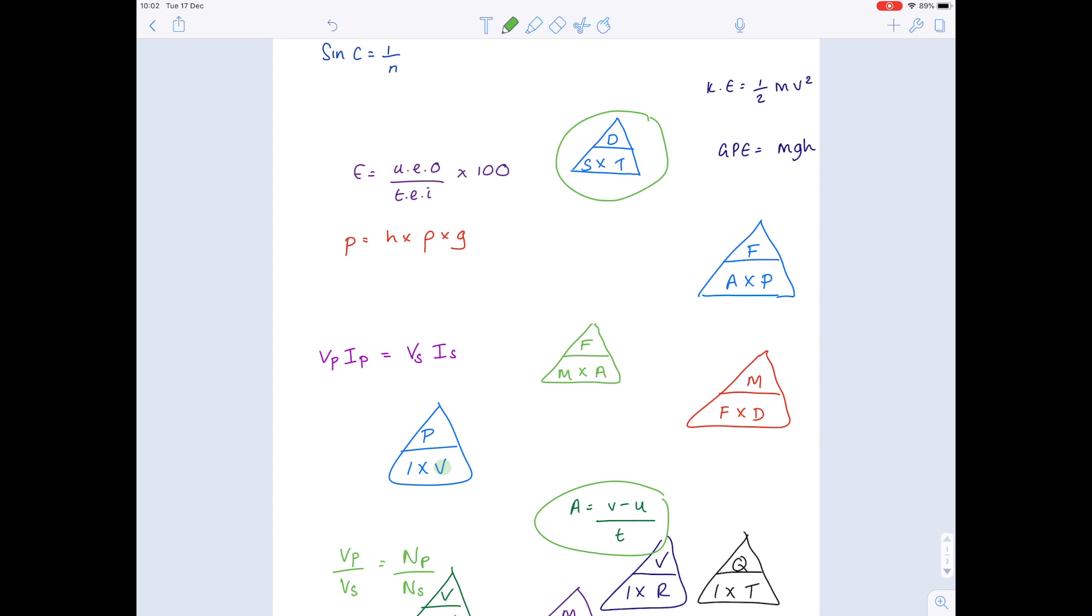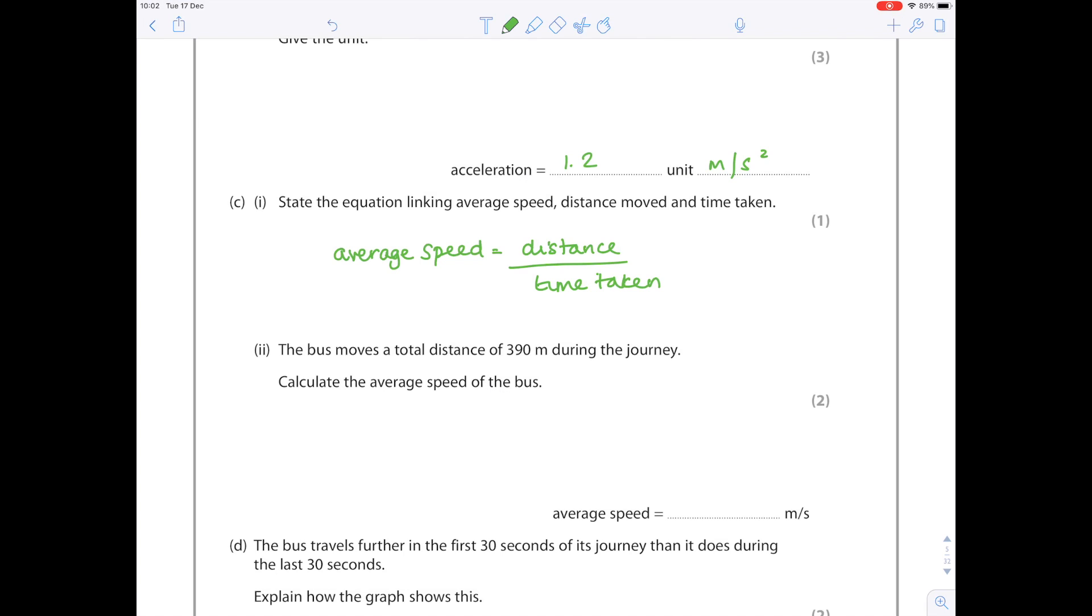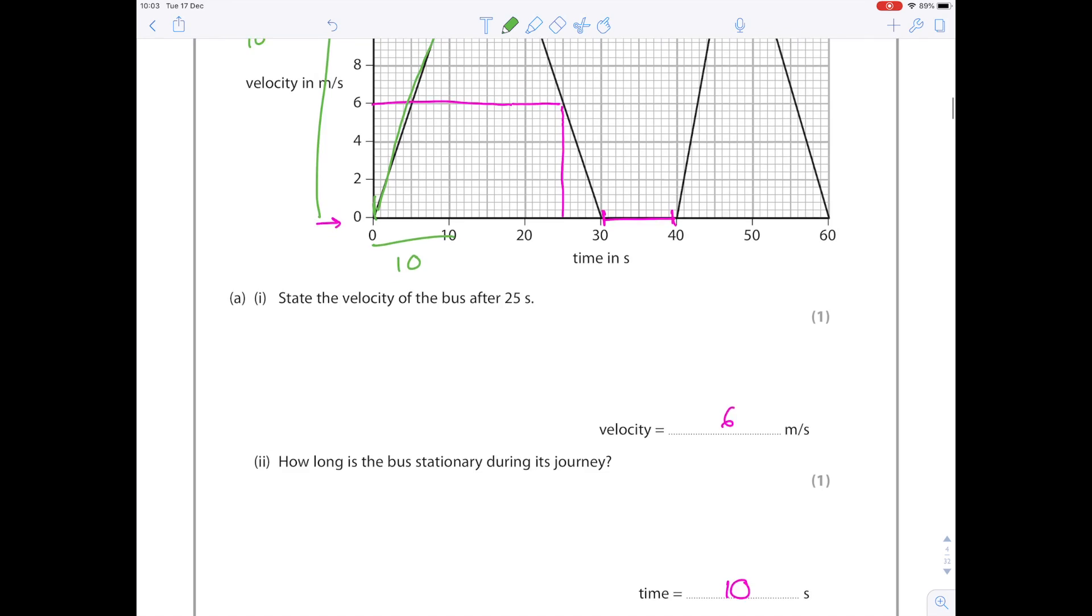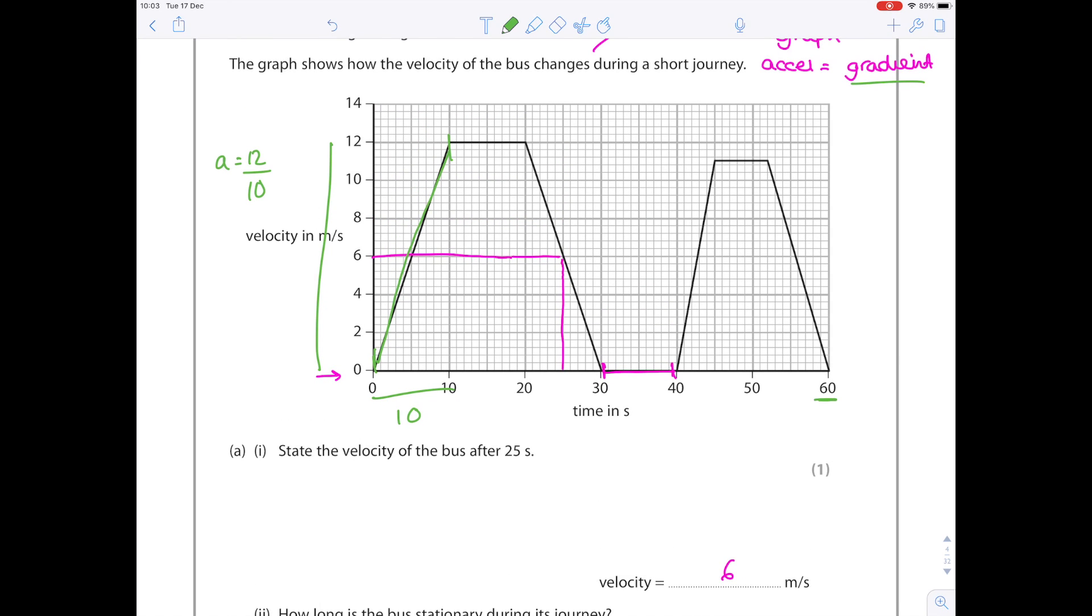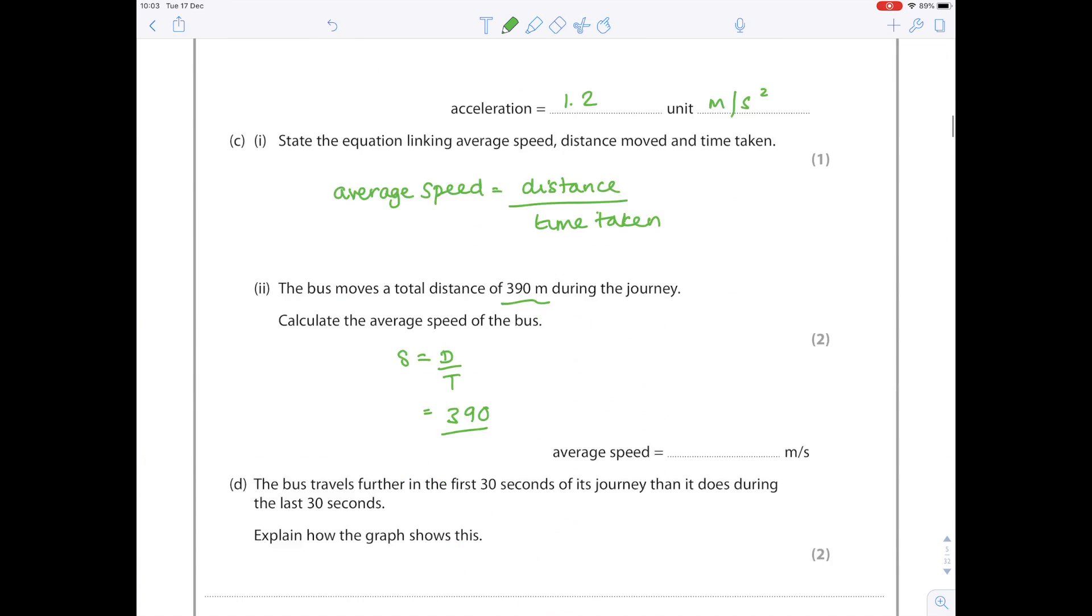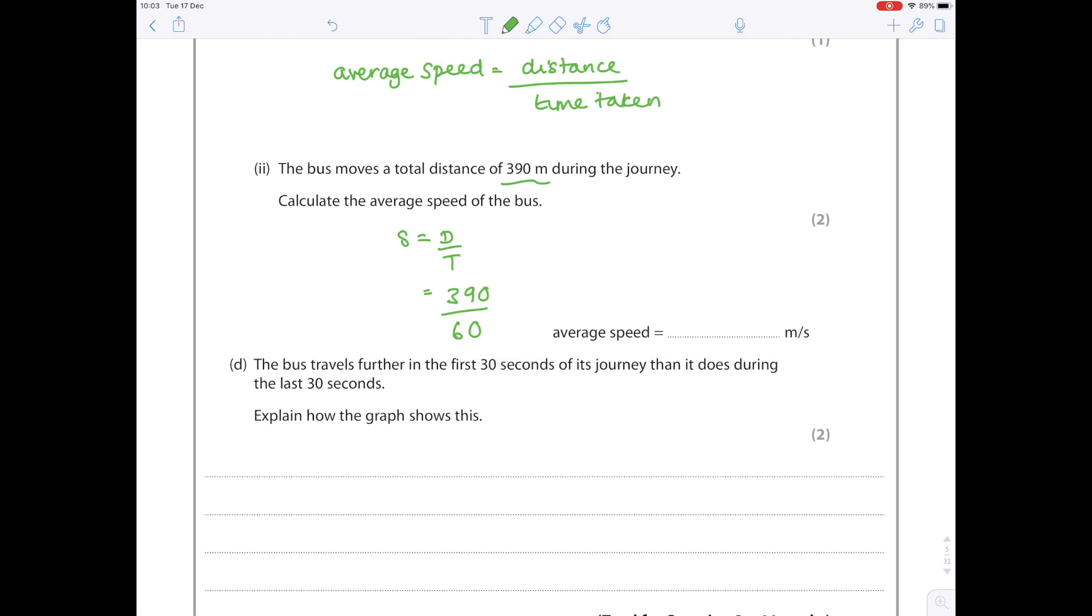State the equation linking average speed, distance moved, and time taken. If I look through my sheets I can see it's this one. Speed equals distance divided by time. The bus moves a total distance of 390 meters during the journey. Calculate the average speed. Speed equals distance divided by time. We know the distance is 390 meters, the time is 60 seconds, so 6.5 meters per second.